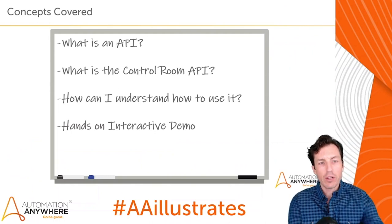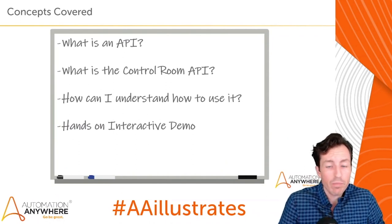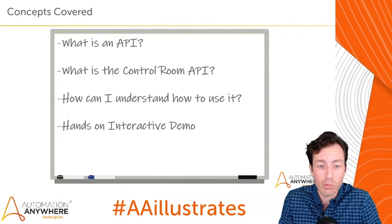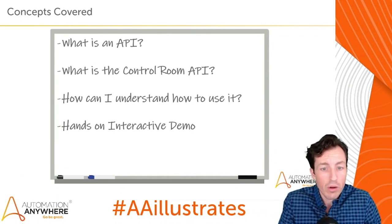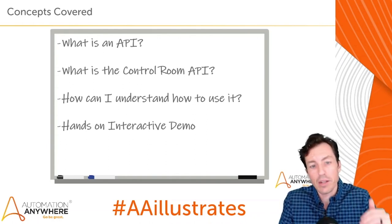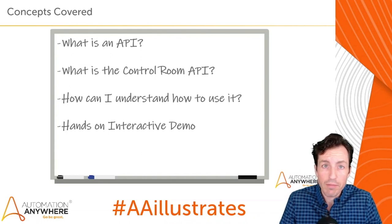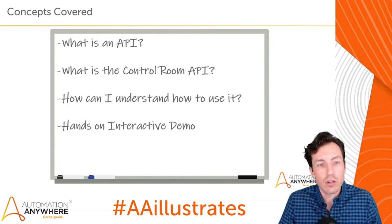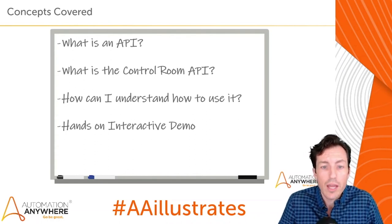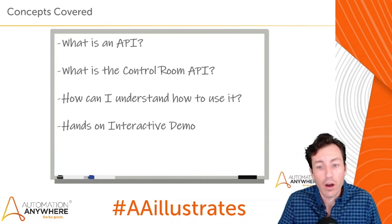For this week, we're going to talk about what an API is, discuss the Control Room API, look at resources available to understand how to use it, and then do a hands-on interactive demo. A lot of people are really surprised at the functionality of the Control Room API — they didn't know about it. I'm excited because I want people to understand what's possible and start exploring how they might integrate the Control Room API with their on-premise applications.